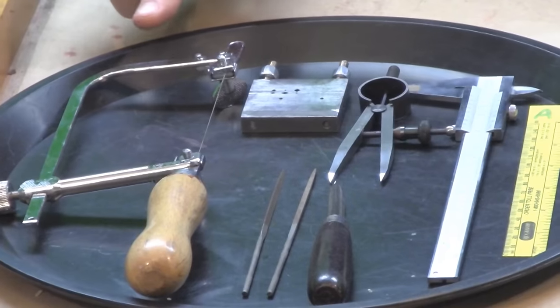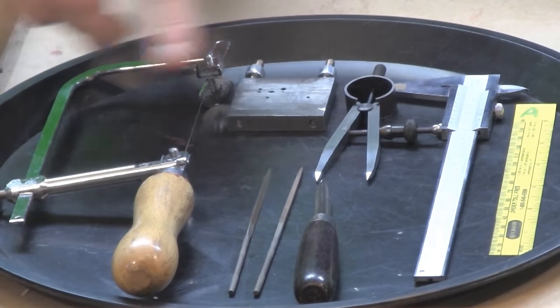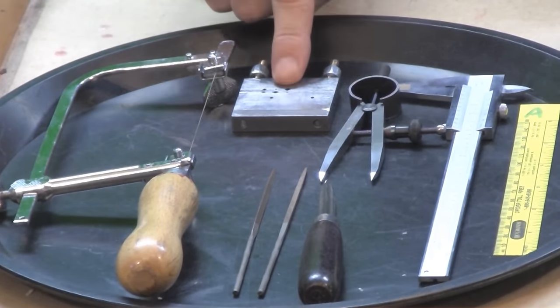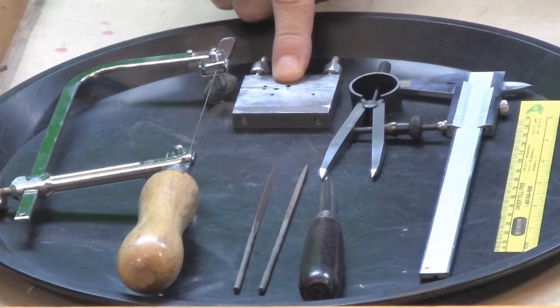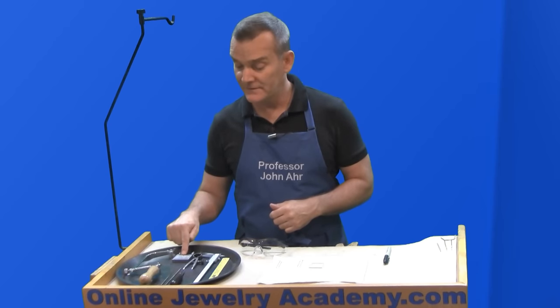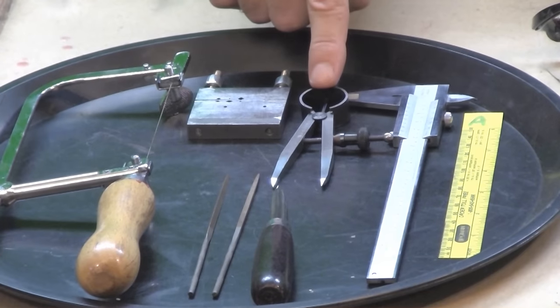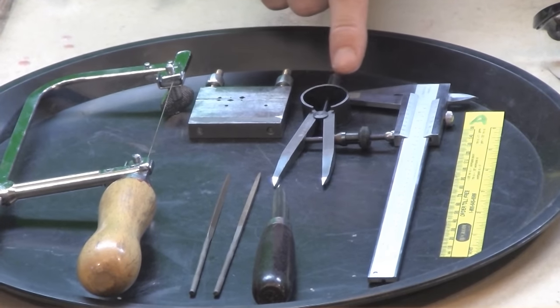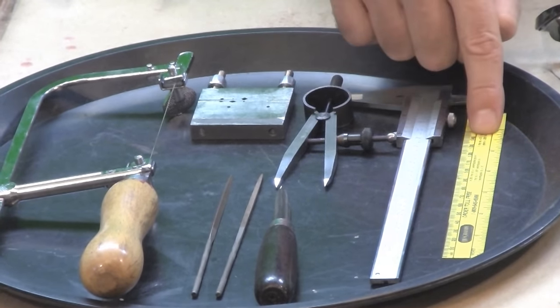First, you're going to need a saw blade and your saw frame. You'll also need the 45-90-degree cutting jig, and we have a video on this. You'll also need a pair of dividers, and you'll also need either a pair of calipers or a ruler.